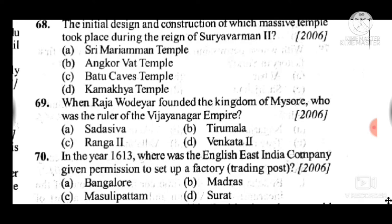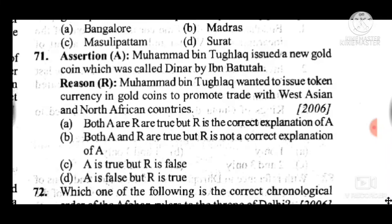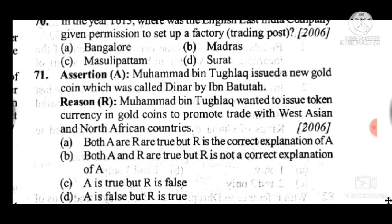Question 71: Assertion — Muhammad bin Tughlaq issued a new gold coin called 'Dinar' by Ibn Battuta. Reason — Muhammad bin Tughlaq wanted to issue token currency in gold coins to promote trade with West Asia and North African countries. Answer is C — A is true but R is false.